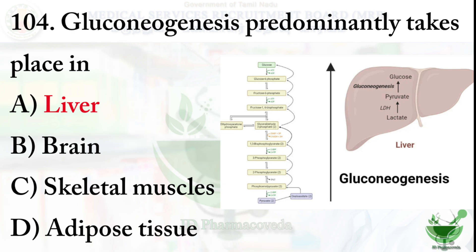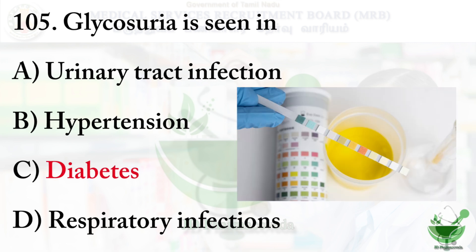Question number 105: Glycosuria is seen in — glycosuria means glucose present in the urine. Options: option A – Urinary tract infection, option B – Hypertension, option C – Diabetes, option D – Respiratory tract infection. The right option is option C – Diabetes, as in diabetic patients glucose is seen in their urine.